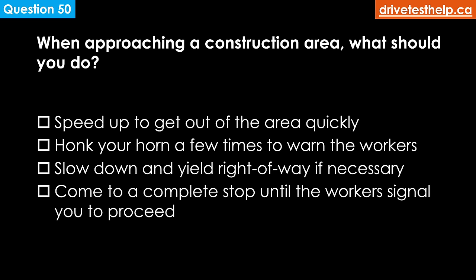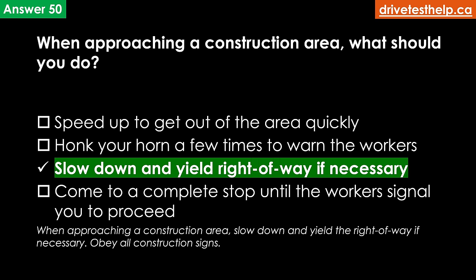When approaching a construction area, what should you do? Options: speed up to get out of the area quickly; honk your horn a few times to warn the workers; slow down and yield the right of way if necessary. The correct answer is slow down and yield the right of way if necessary. When approaching a construction area, slow down, yield the right of way if necessary, and obey all construction signs.